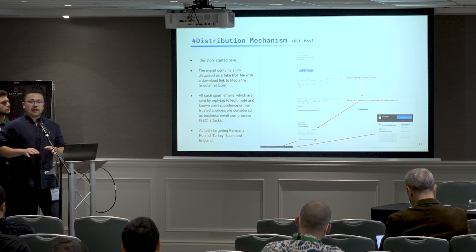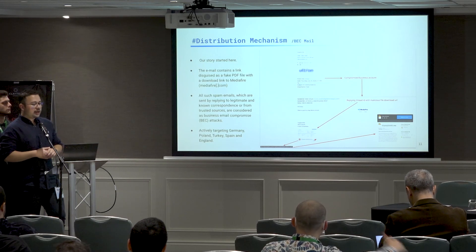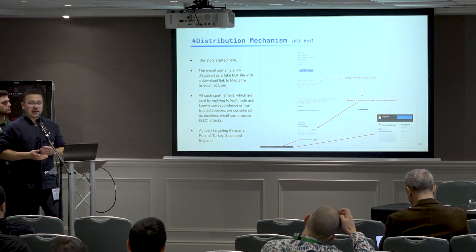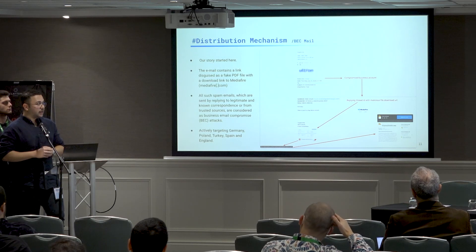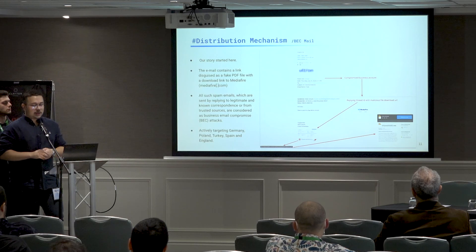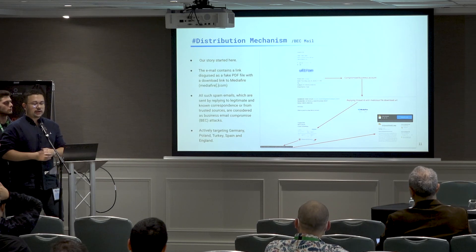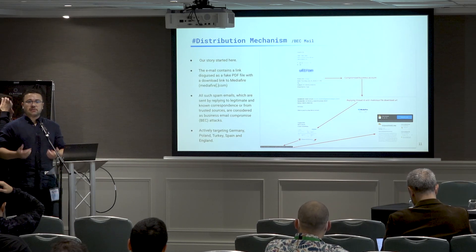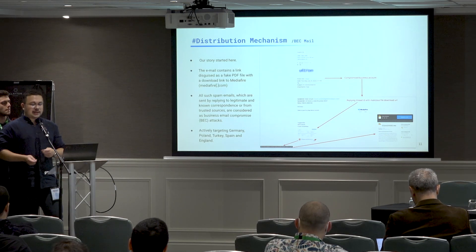Our story started with a phishing email received by one of our company employees. The email contained a link disguised as a fake PDF file, and also a media file link, by replying to an email previously sent by our trusted partner. Due to the nature of business email compromise, the user is reflexively exposed to different fraud methods — clicking the link because it appears to come from a trusted partner, downloading file attachments, or sending money to altered IBAN addresses.